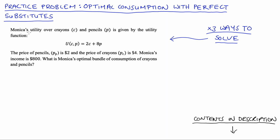Here's our question. Monica's utility over crayons C and pencils P is given by the utility function U equals 2C plus 8P. The price of pencils, that's P subscript P, is $2. And the price of crayons, that's P subscript C, is $4. Monica's income is $800. What is Monica's optimal bundle of consumption of crayons and pencils?